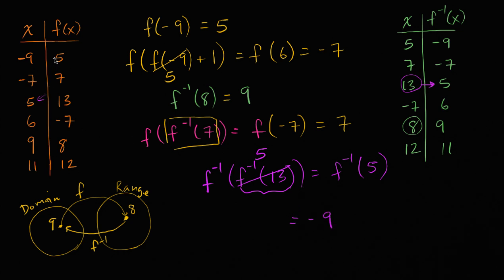Once again, f goes from negative nine to five, so f inverse goes from five to negative nine. At first, when you start doing these kinds of inverse function evaluations, it looks a little confusing — it seems like you're going back and forth. But you just have to remember: a function maps from one set of numbers to another, and the inverse of that function goes the other way. So if the function goes from nine to eight, the inverse goes from eight to nine — you just switch the columns. Hopefully that clarifies more than it confuses.